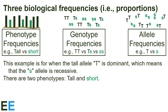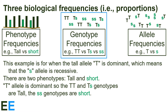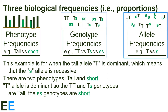There are two phenotypes, tall and short. The T allele is dominant, so the TT homozygous and Ts heterozygous genotypes are tall, but the ss homozygous genotypes are short. The frequency of tall individuals is 6 out of 9, or 0.66, whereas the frequency of short individuals is 3 out of 9, which is 0.33. The genotype frequencies are 0.22 for TT, 0.44 for the heterozygote, and 0.33 for ss. The frequency of the T allele is 8 out of 18 or 0.44, and the frequency of the s allele is 10 out of 18, which is 0.55.